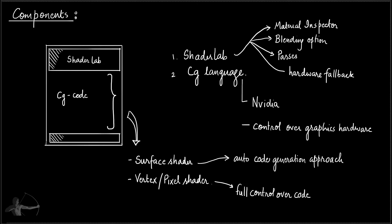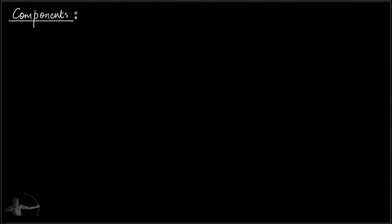Now let's get back to our components. There are seven different components of the shader. The first component is Properties. Properties are the inputs or parameters for a shader that can be set by the user in the material inspector of Unity. The code will use that input for the calculation of the vertex and pixel shader. Properties are defined in ShaderLab, and based on the type of property, Unity will create the UI in the editor.